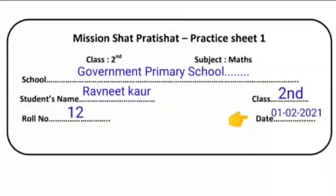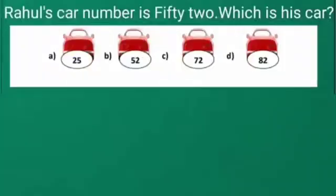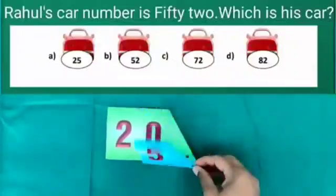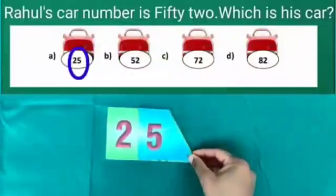Now let's solve some sums of practice sheet. Our first sum is: Rahul's car number is 52, which is his car? Here we have 4 options for this question. Let's read the number of car given in option A. 20 and 5 is 25.